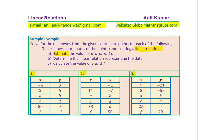Part B is to determine the linear relation representing the data — that means find the equation. And Part C is to calculate the value of E and F. You'll notice in these tables, the values A, B, C, and D you need to estimate, and the values E and F you need to calculate after finding the linear relation. You can always pause the video, answer this question, and then look into my suggestions.